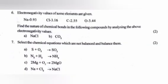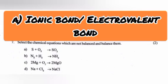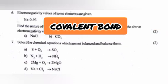Question 6: Electronegativity values of some elements are given. Find the nature of chemical bonds in the following compounds by analyzing the above electronegativity values. A. NaCl B. CO2. Answer: A. Ionic bond or electrovalent bond. B. Covalent bond.